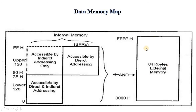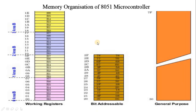Data memory stores data such as immediate results, variables, and constants required for execution of the program. The AT51 has a hardware architecture which uses separate code/program memory and data memory. The AT51 has internal RAM and ROM memory. For additional needs, memory can be added externally using suitable circuits.